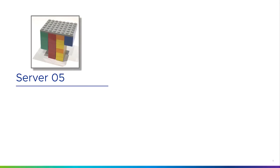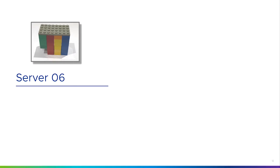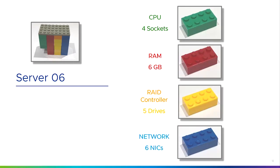Server number five has four CPUs, six gigs of RAM, two RAID controllers with four drives, and two network interface cards. Server number six is an even bigger beast: four sockets, six gigs of RAM, one RAID controller with five drives, and six network cards.